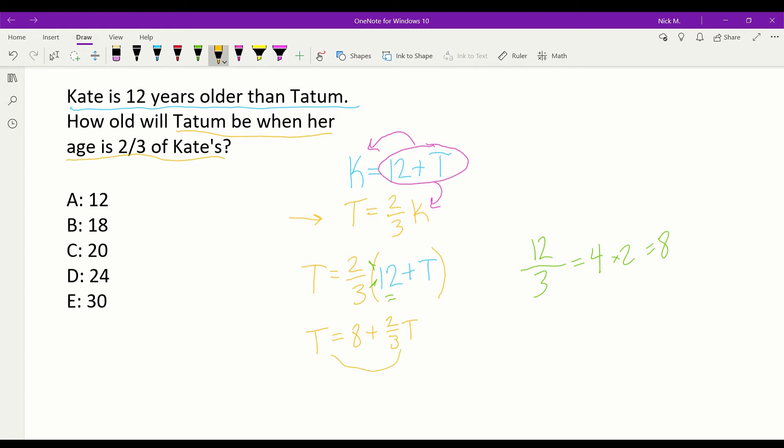Wow, that's a terrible arrow. Let's try that again. Two-thirds T. There we go. So now we're at one-third T equals eight. Multiply each side by three to give you T equals 24. And that, my friends, is your answer, D.